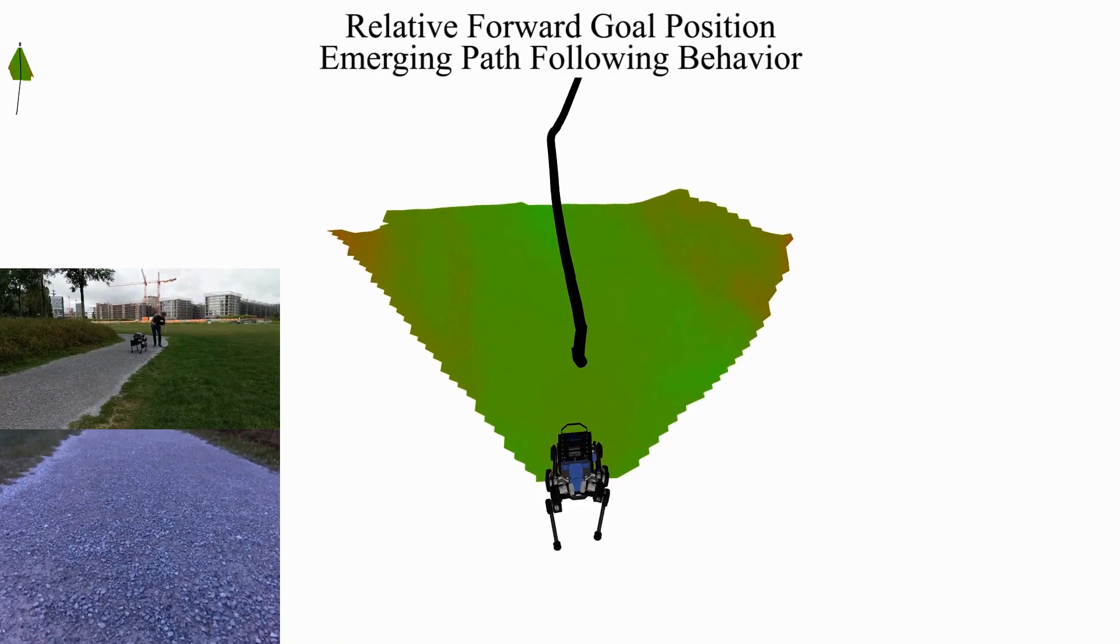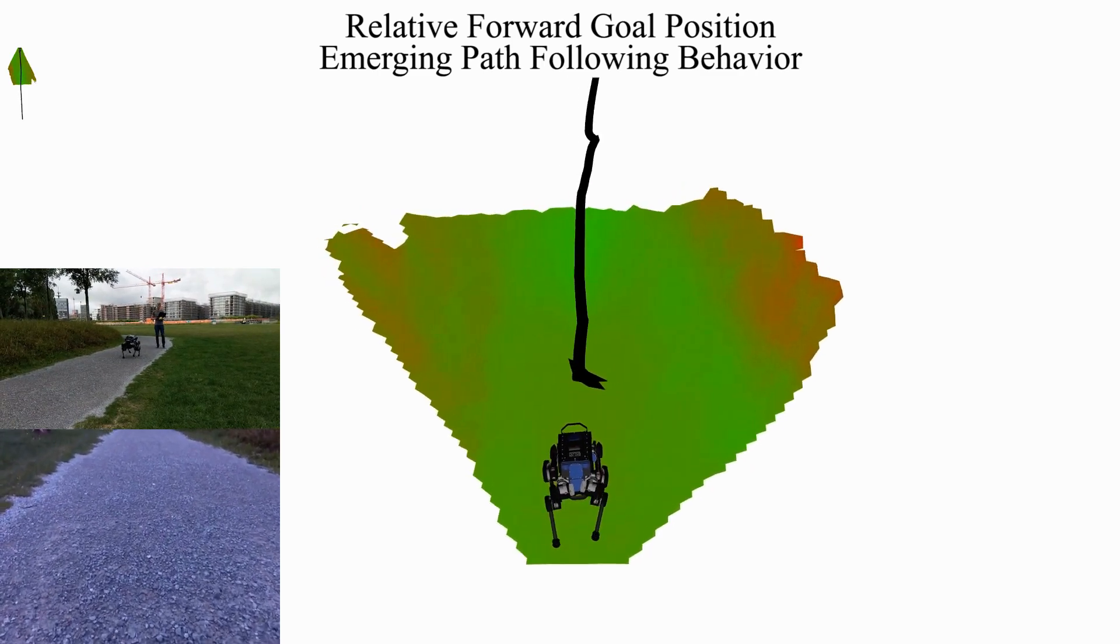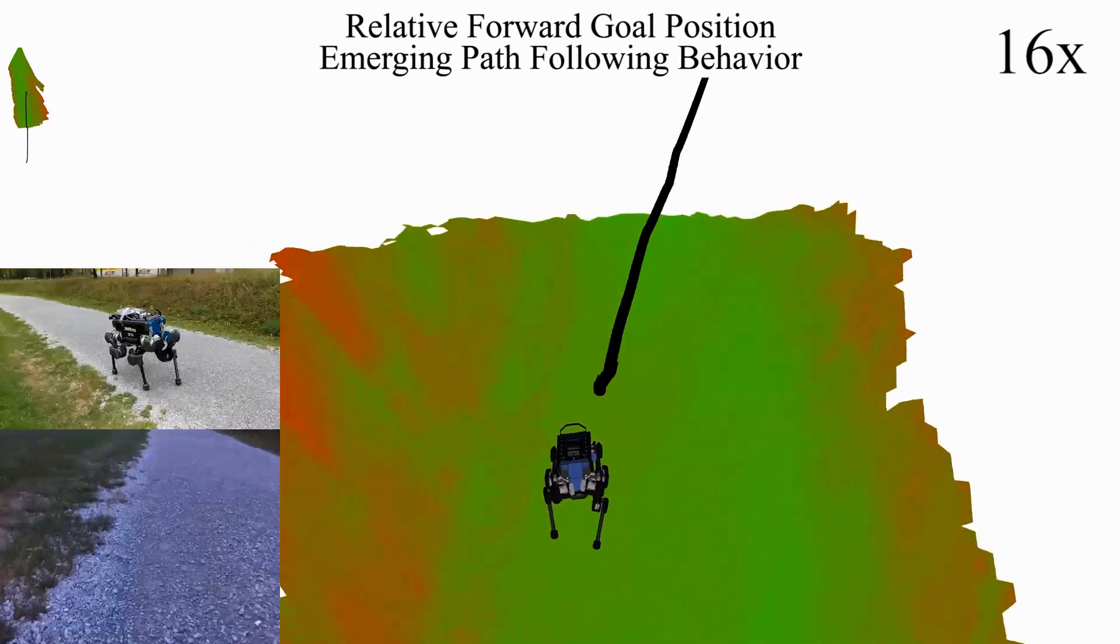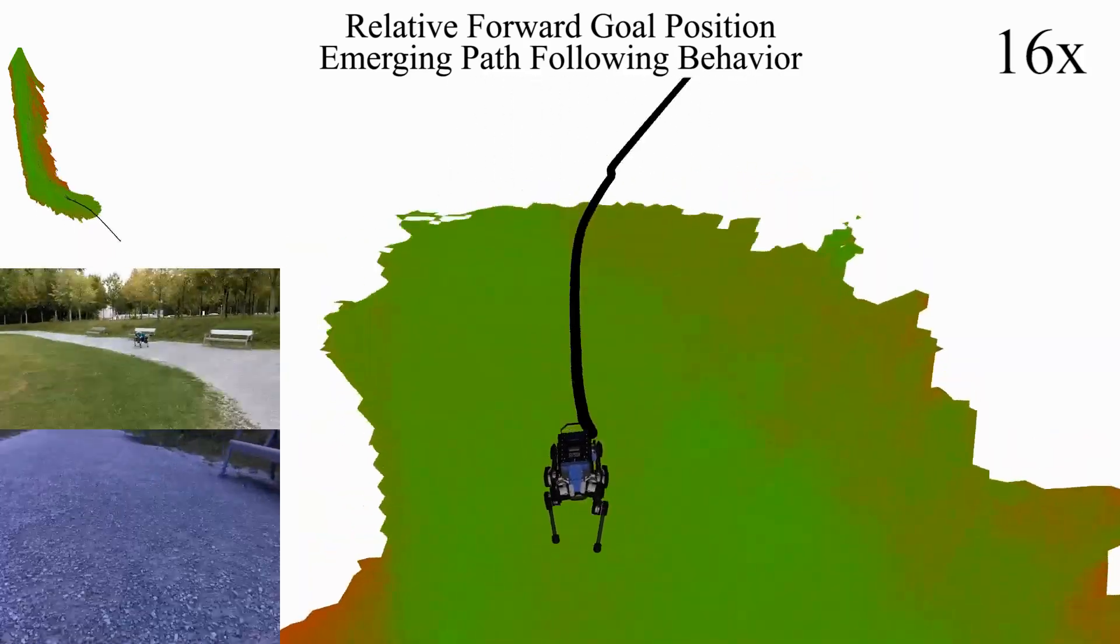In an additional experiment, the robot was given a relative forward goal position, which was continuously updated. Even without having an explicit notion of a path, this leads to emerging path-following behavior.